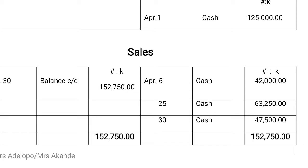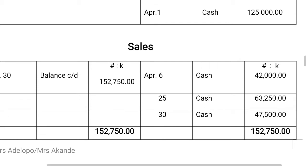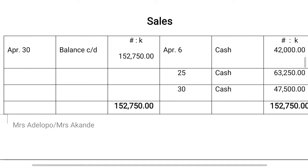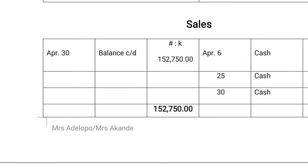We move to sales. Our sales — the first one is on April 6th, we have 42,000 Naira. April 25th, cash, we have 63,250. April 30th, cash, 47,500 Naira. So we add everything up and we get 152,750. Because the transactions are more than one, in order to have a balance, we bring down 152,750 as balance carried down.